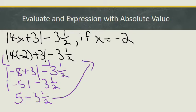So now I'm left here with 5 minus 3½. To finish evaluating my expression, I'm going to subtract 3½ from 5, and when I do that I'll get 1½. So if x is minus 2, and the expression is the absolute value of 4x plus 3 minus 3½, then evaluating that expression is going to give me a value of 1½.